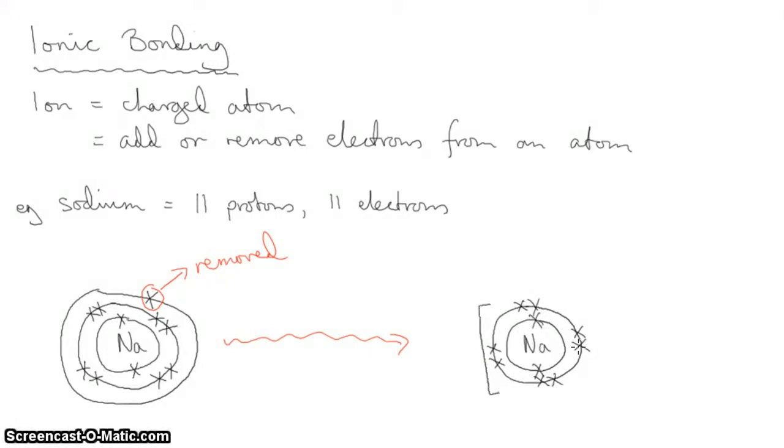We represent that by putting square brackets around the sodium to isolate the new picture and putting a plus sign to represent the fact that it's an ion. Why is it one plus?